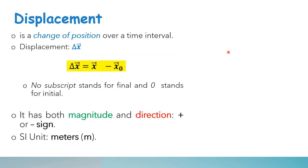Now let's talk about displacement. Displacement is a change of position over a time interval. Displacement can be denoted as Δx, where Δx means the change in x. So Δx equals x minus x₀ (x sub zero). Take note that no subscript stands for final and the subscript zero stands for initial. Displacement is a vector quantity — it has both magnitude and direction and can be either positive or negative. The SI unit of displacement is in meters.